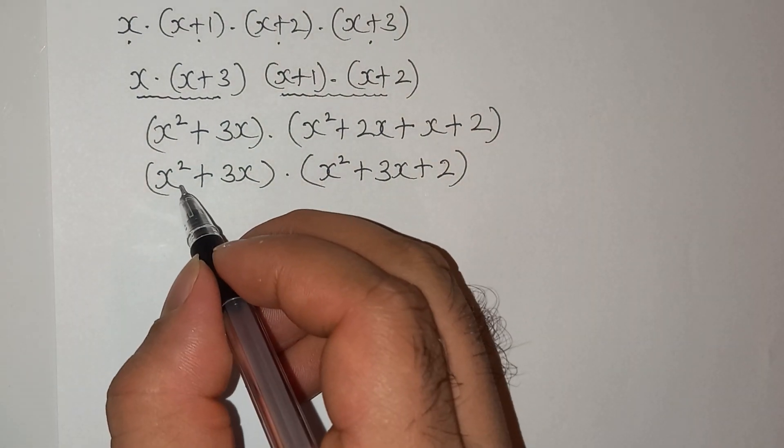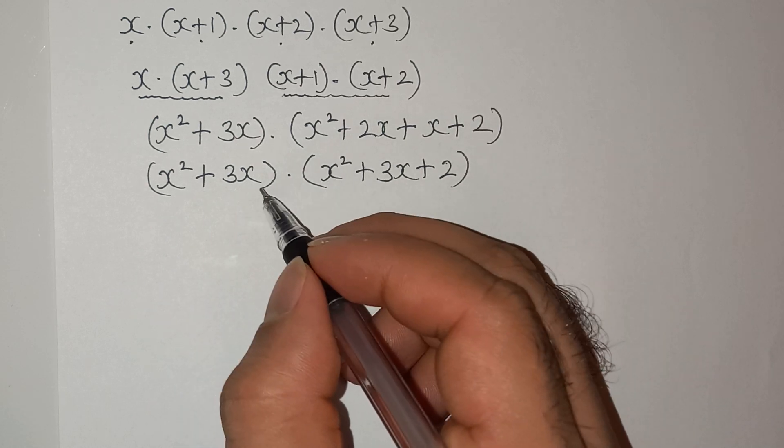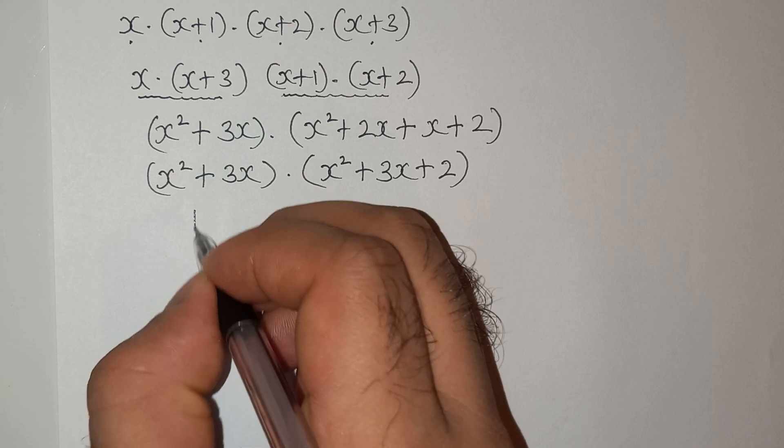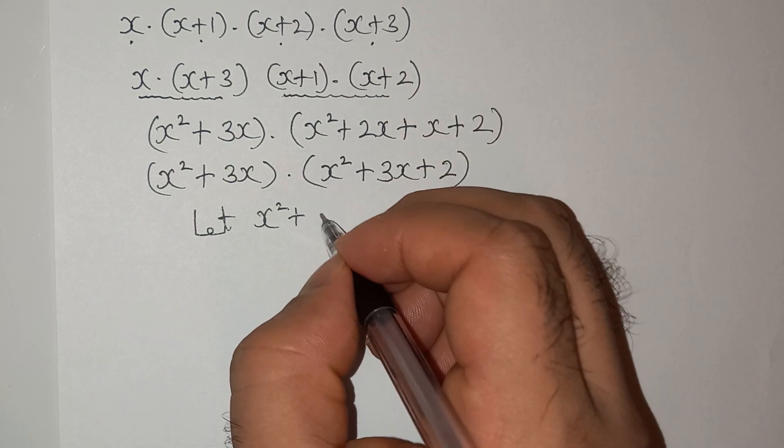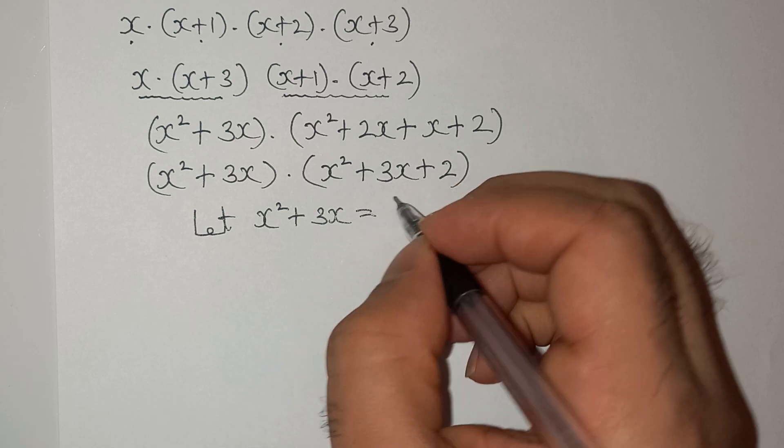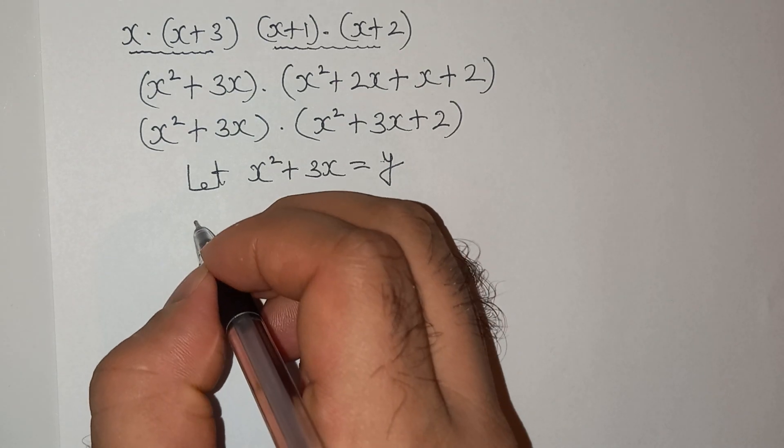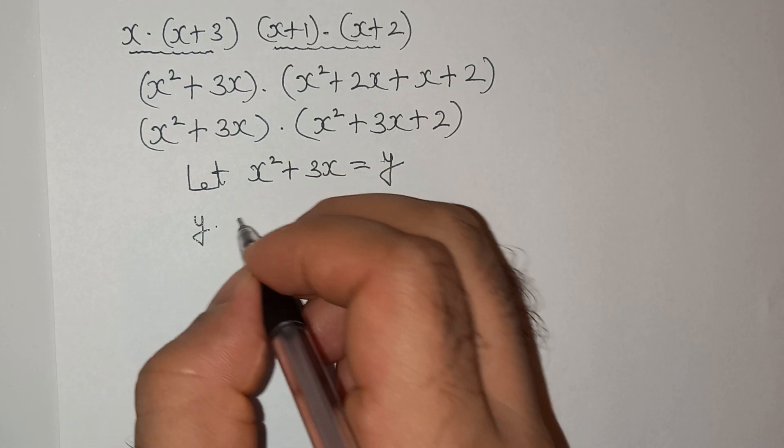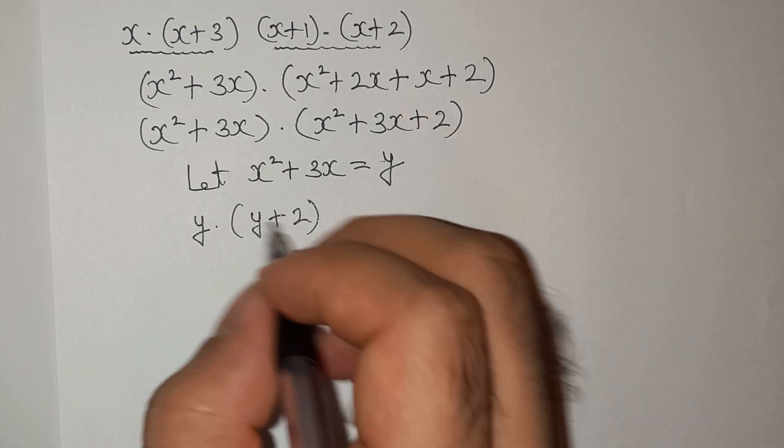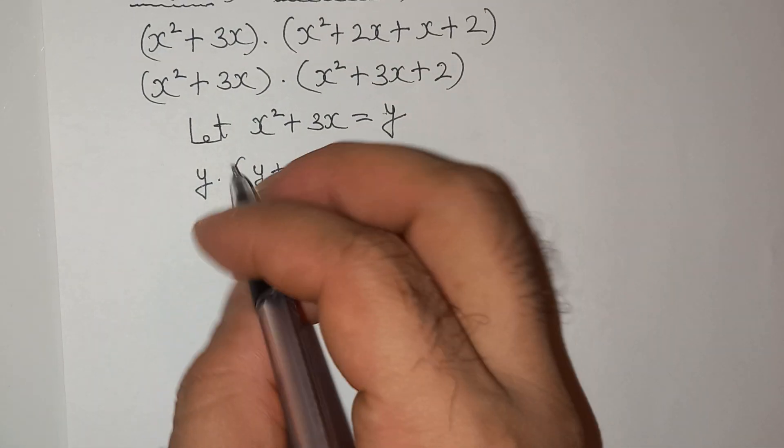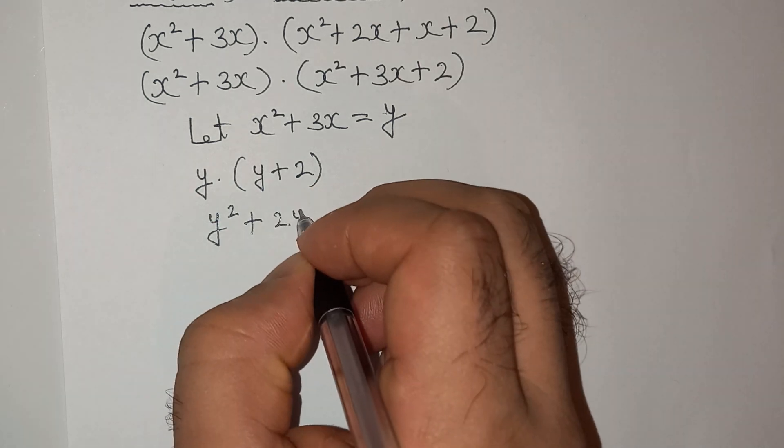Now you can see that (x² + 3x) is common in both. So let (x² + 3x) equals to y. So this can be written as y multiplied by (y+2). Now let's open the bracket: y² + 2y.